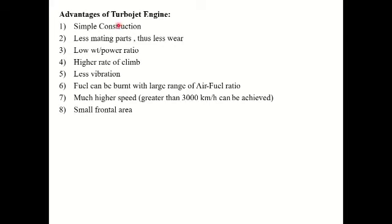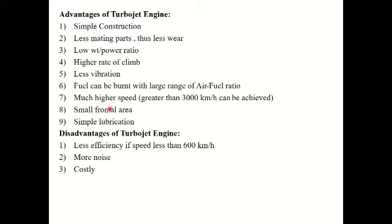The advantages of the turbojet engine are: the construction is simple, there are fewer moving parts, the weight of the engine is less, and the power produced is more. Higher rate of climb — if the aircraft needs to increase altitude, this rate is higher. Vibrations are less because rotary machines are prone to less vibration. Fuel can be burned with a large range of air-fuel ratio. Much higher speed can be attained — speeds as high as 3000 km/h can be achieved. It has a small frontal area, so drag losses are less, and the lubrication system is simple.